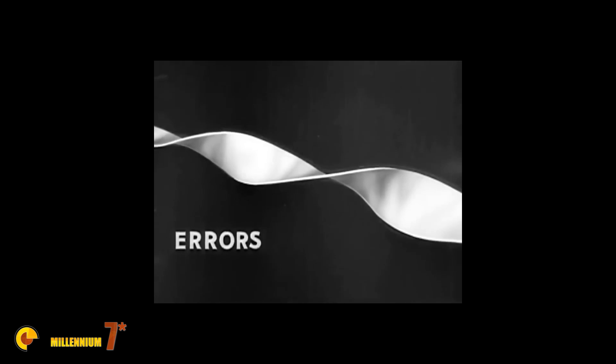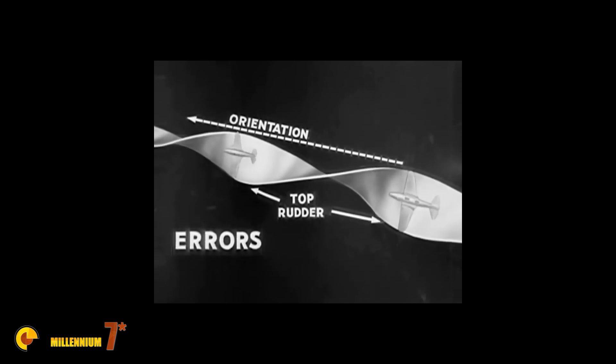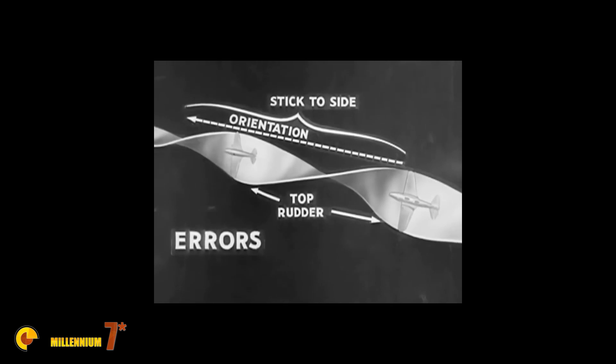This ribbon path of flight shows the points of common errors in the slow roll. Most common is an error in orientation. This occurs when the airplane is not rotated about a definite position. Failure to use top rudder in the vertical positions of the roll always causes trouble. Failure to hold the stick well over to the side throughout the roll also spoils this maneuver.